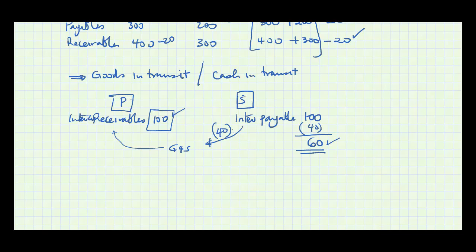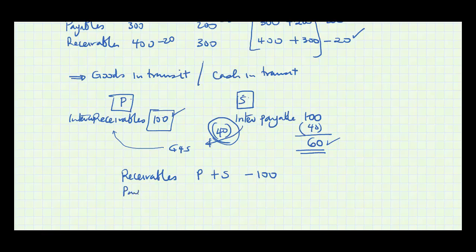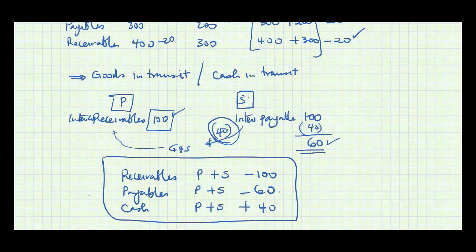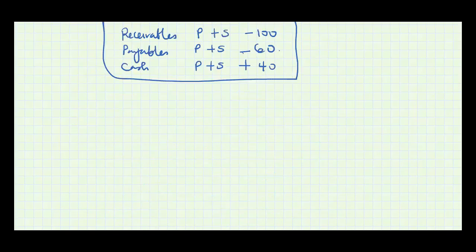At the same time, since the subsidiary already reduced its cash balance by 40 (the cash in transit), we have to add back this money to the cash balances. So under receivables: parent plus subsidiary minus 100; under payables: parent plus subsidiary minus 60; and under cash: parent plus subsidiary plus 40 (the cash in transit).